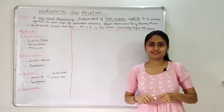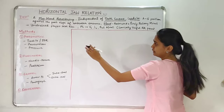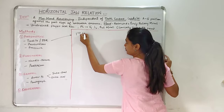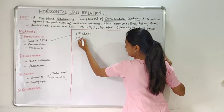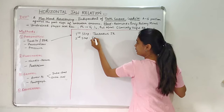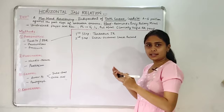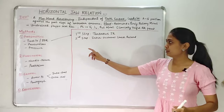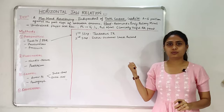Now we will see in detail the physiologic first subtype — the tactile or interocclusal check record. Here there are just two steps. The first step is to record a tentative jaw relation, and the second step is to record an interocclusal check record. After taking these two, we verify and compare both, and any errors we get we try to nullify. Both are verified and the errors will be corrected.